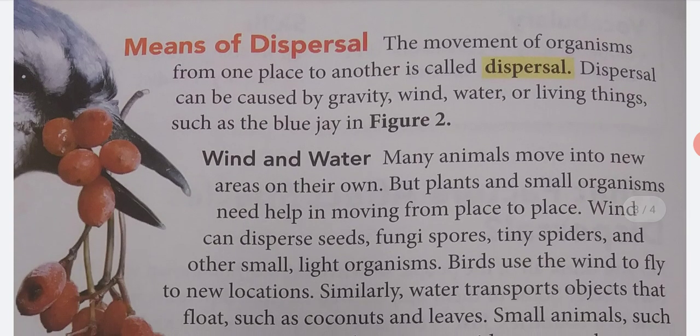The movement of organisms from one place to another is called dispersal. Dispersal can be caused by gravity, wind, water, or living things, such as the blue jay in Figure 2.